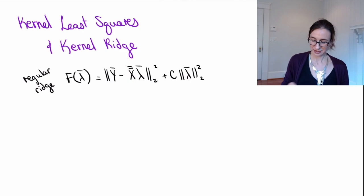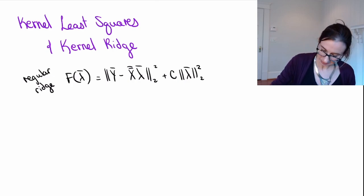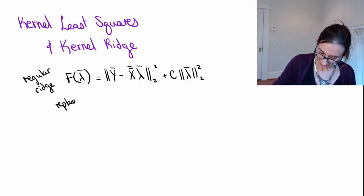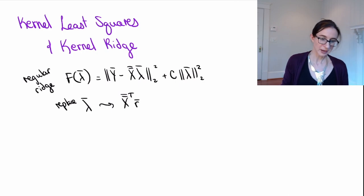Okay, here's the trick. We don't have everything in terms of inner products, right? This term, that's particularly bad. So what we're going to do is we're going to replace lambda by X transpose times r. And now our objective is going to be in terms of r.